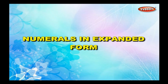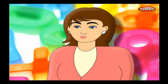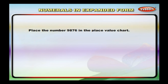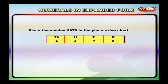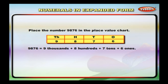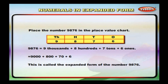Numerals in expanded form. A numeral, when expressed as a sum of the place values of its digits, is said to be in its expanded form. For example, 9,876 is equal to nine thousands plus eight hundreds plus seven tens plus six ones, which equals nine thousand plus eight hundred plus seventy plus six. This is called the expanded form of the number nine thousand, eight hundred and seventy-six.